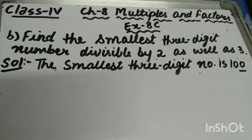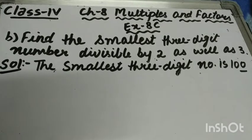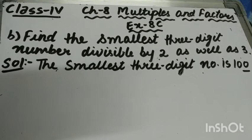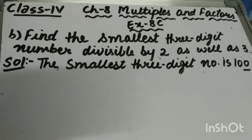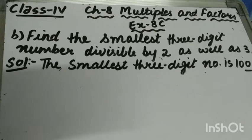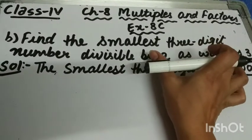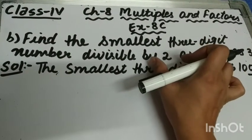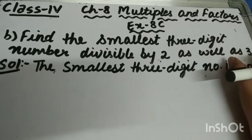Let's start part B of question number 10. The question is: find the smallest 3-digit number divisible by 2 as well as 3. We have to find the smallest 3-digit number which is divisible by both 2 and 3.